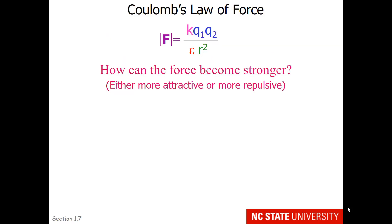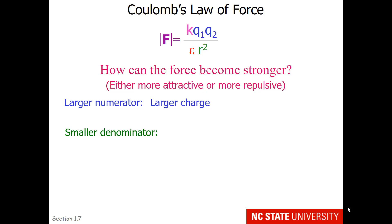How can the melting points become higher, which means the interparticular force becomes stronger? We can have a larger numerator — larger charges will result in a higher melting point for cations and anions. We can also use a smaller denominator. Smaller cations and anions typically have a higher melting point than larger ones, because the distance between the center of the charges is closer.